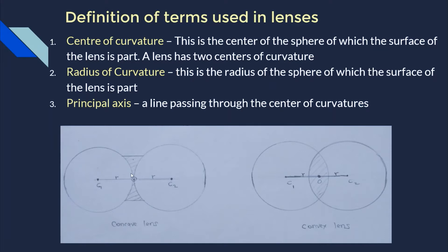The curve of a lens is assumed to be part of a bigger, imaginary sphere. The center of that sphere is what we call the center of curvature. For the convex lens, the two imaginary spheres are overlapping — one curve on one side is part of one imaginary sphere, and the other curve on the other side is part of another imaginary sphere. The centers of those spheres are the centers of curvature, so this lens also has two centers of curvature.